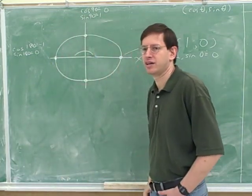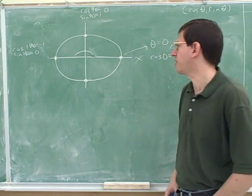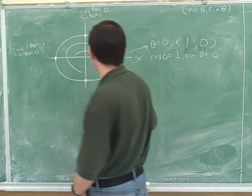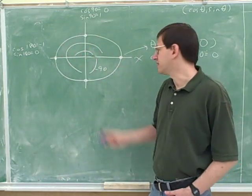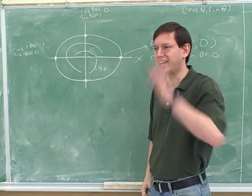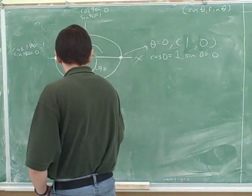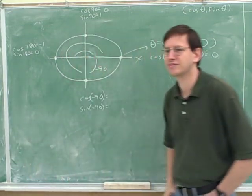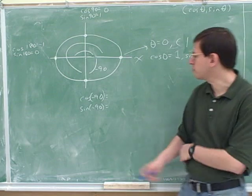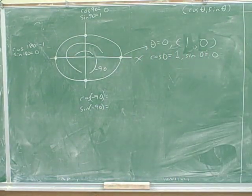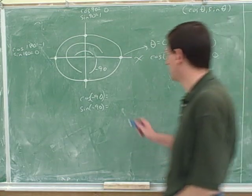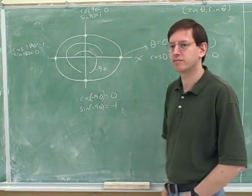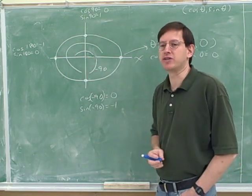What angle does this point represent? 270 degrees. This is a 270-degree angle with the positive x-axis, but it also represents a negative 90-degree angle. The cosine of negative 90 is zero and the sine of negative 90 is negative one, because this point has an x-coordinate of zero and a y-coordinate of negative one. All of these points we shouldn't have to use our calculator for.